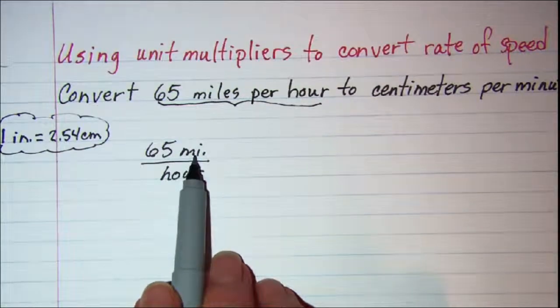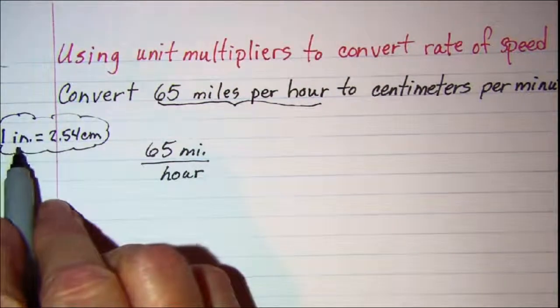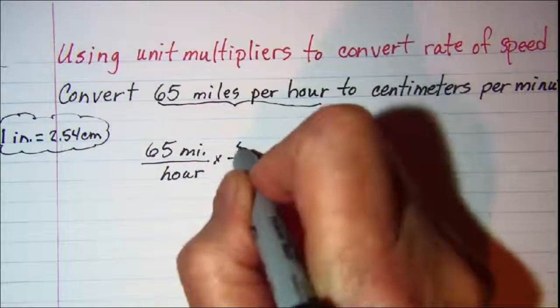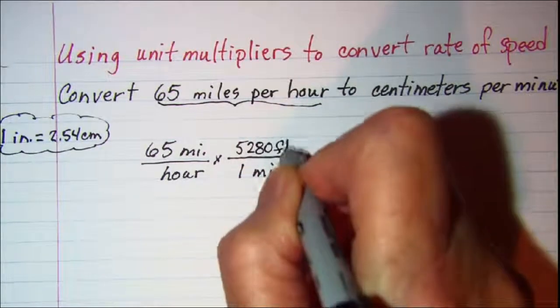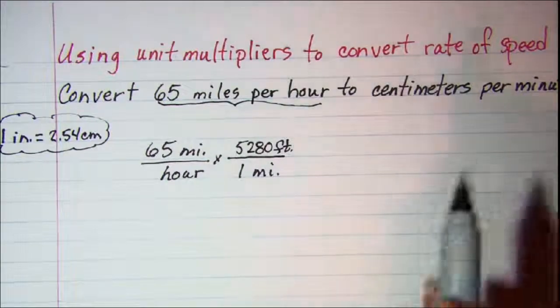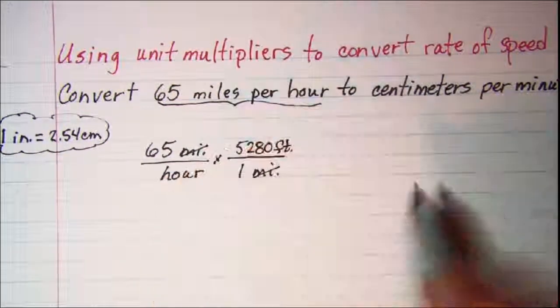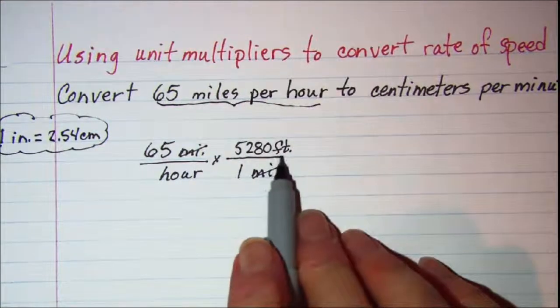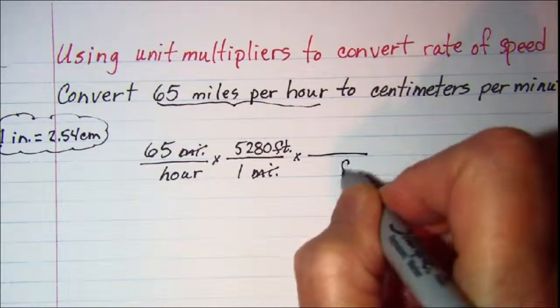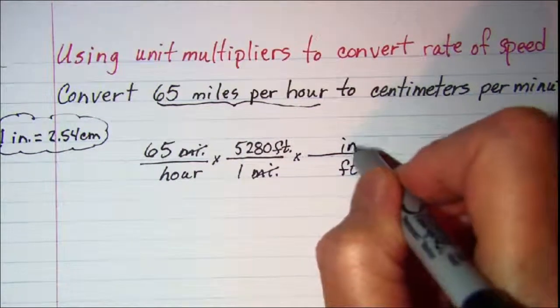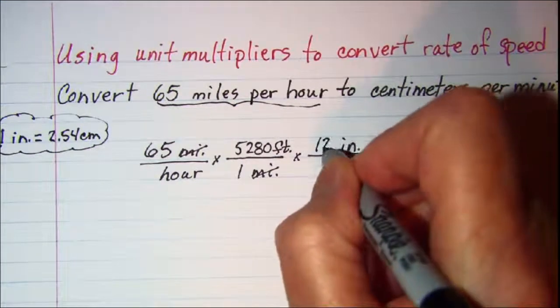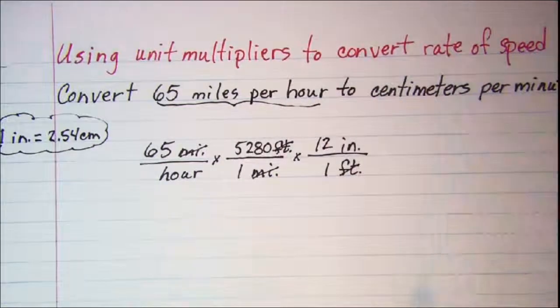So the first thing I am going to do is convert this mile unit. Since I am going to inches I will take my mile, one mile is the same as 5,280 feet and this is an equivalence that you should have memorized. Now my unit miles will cancel off and I am now in feet per hour. I still need to get to inches so I want to cancel off feet and convert that to inches and I know 1 foot is 12 inches so 1 foot there and 12 inches there and now my feet units will cancel off.